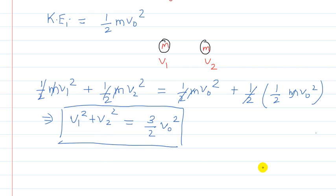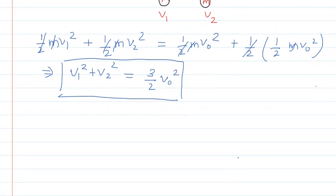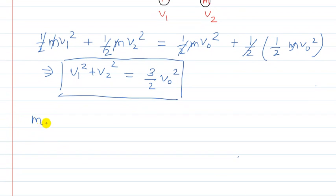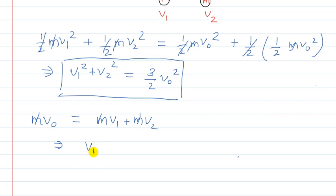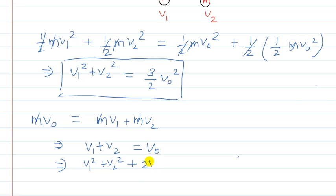The second equation we are going to write using momentum conservation. Initial momentum is m V0. Final momentum is m V1 plus m V2. So momentum conservation gives m V0 equals m V1 plus m V2. Mass cancels out, so V1 plus V2 equals V0. Now squaring both sides: V1 squared plus V2 squared plus 2 V1 V2 equals V0 squared.